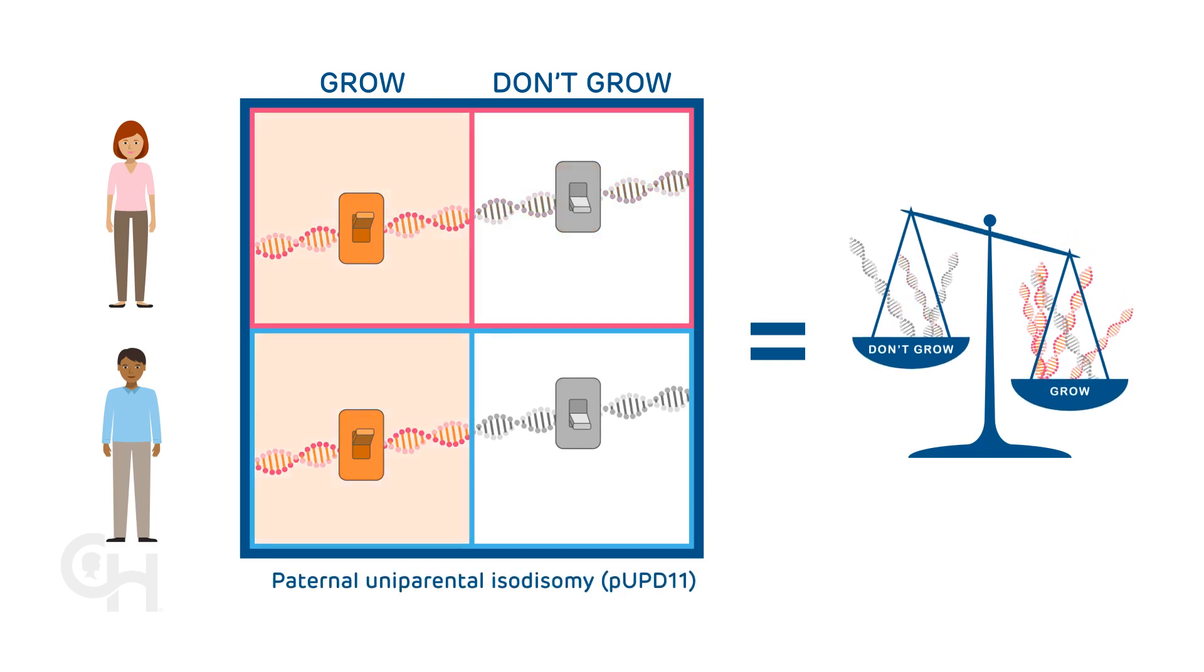Paternal uniparental isodisomy, PUPD11, occurs when both grow switches are turned on and both don't grow switches are turned off.